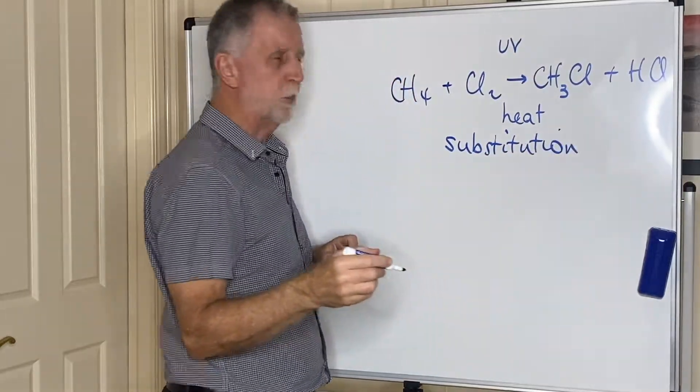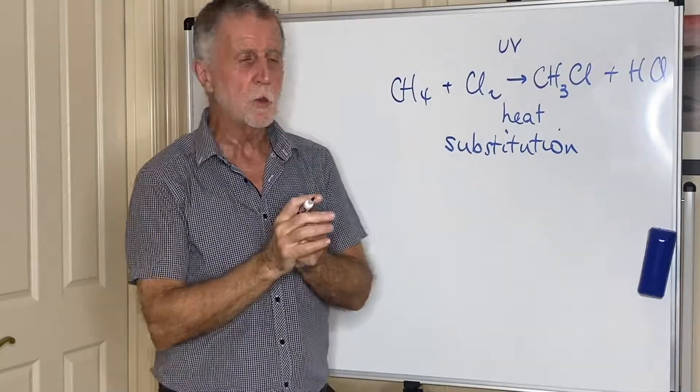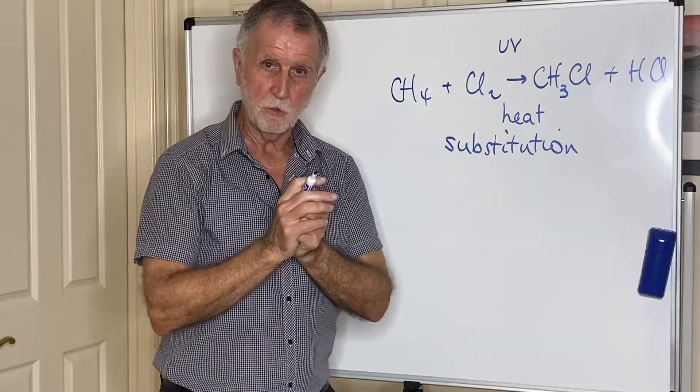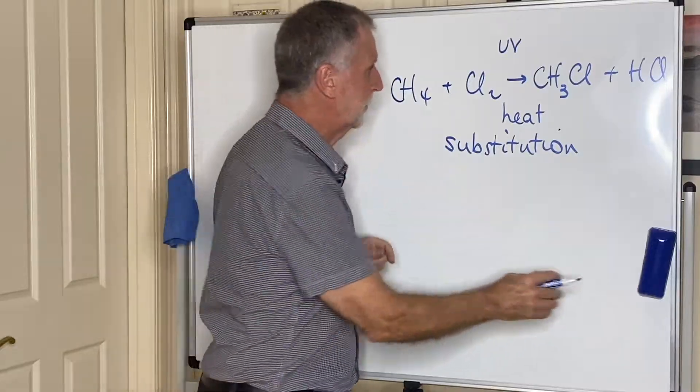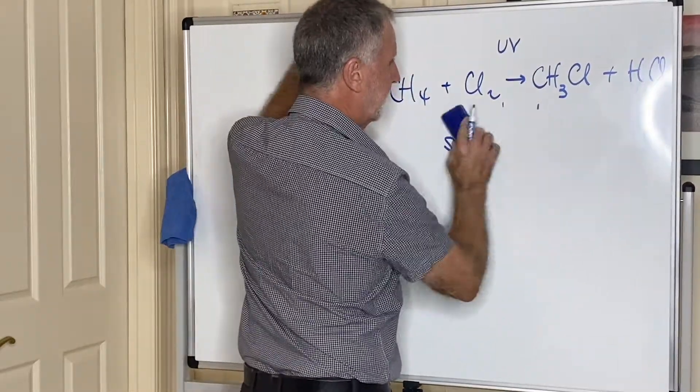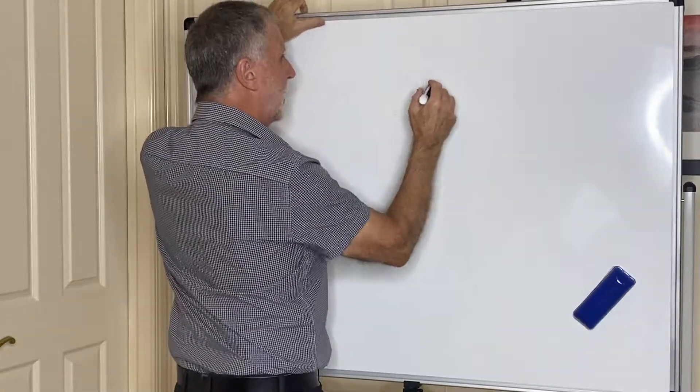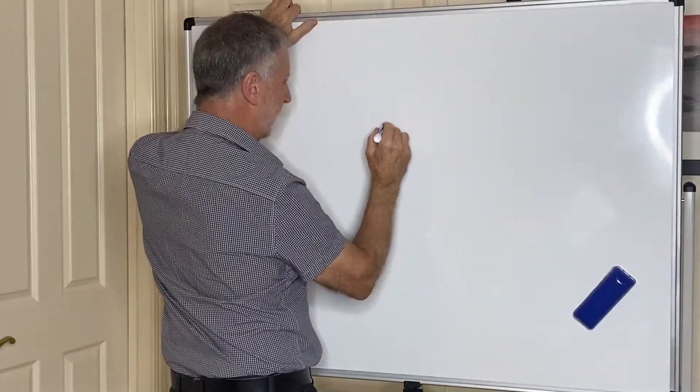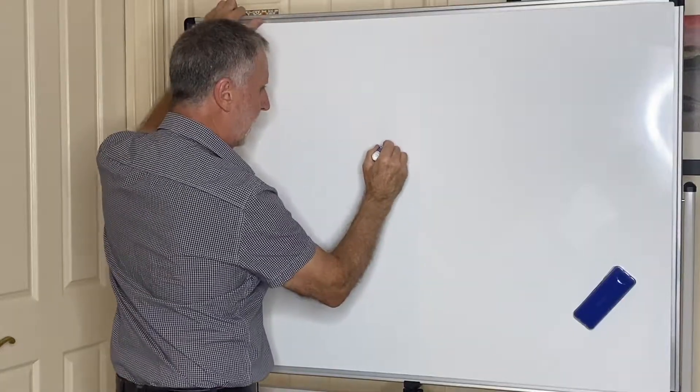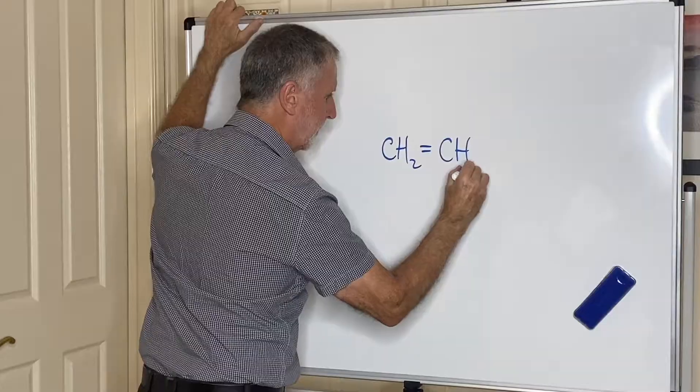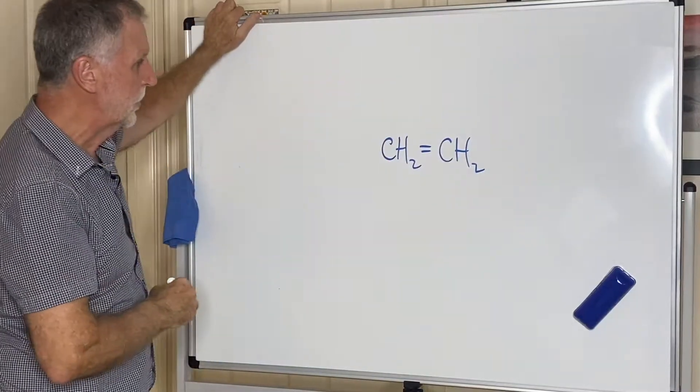Which shouldn't come as any surprise, because it's an English word we use anyway. There's alkanes done. Alkenes. Alkenes have a double bond that gives them a hell of a lot more chemistry. I'm going to put the alkene in the middle here so I can draw a few arrows around it.